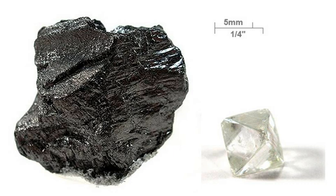Carbon-14 is a naturally occurring radioisotope, created in the upper atmosphere (lower stratosphere and upper troposphere) by interaction of nitrogen with cosmic rays. It is found in trace amounts on Earth of one part per trillion or more, mostly confined to the atmosphere and superficial deposits, particularly of peat and other organic materials. This isotope decays by 0.158 MeV β-emission. Because of its relatively short half-life of 5,730 years, 14C is virtually absent in ancient rocks. The amount of 14C in the atmosphere and in living organisms is almost constant, but decreases predictably in their bodies after death. This principle is used in radiocarbon dating, invented in 1949, which has been used extensively to determine the age of carbonaceous materials with ages up to about 40,000 years.